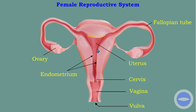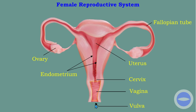The cervix is the lower narrow opening of the uterus. The vagina is a muscular tube which runs from the cervix to the exterior. The vulva is the opening to the vagina, and it is covered by two folds called labia. You must be able to label this structure.